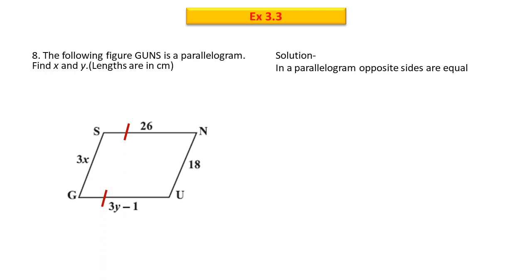Opposite sides ka pair. So, the first pair is SN and GU. The second pair is SG and NU. Working through the equations, we got x equals to 6 cm, y equals to 9 cm.